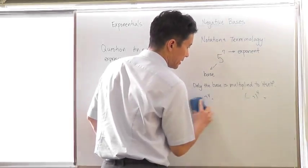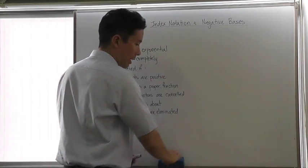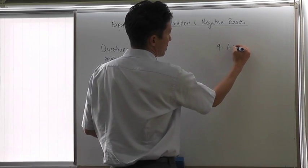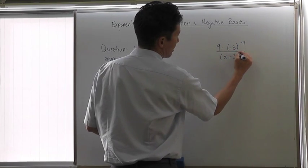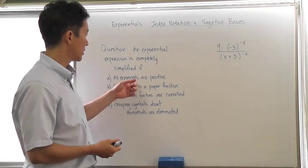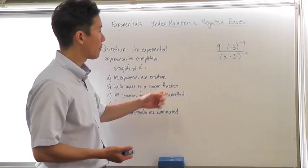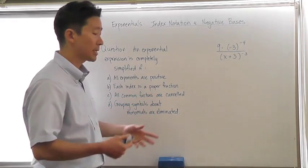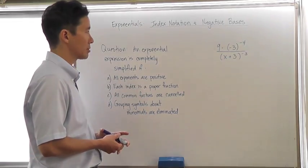Let's take a look at one simple example and check whether something is simplified or not. Let's say we have nine times negative three raised to the negative fourth power, all divided by x plus three raised to the negative third power. Looking at this, there are a couple of things: first, the exponents are not positive, so we need to change that. The index is a proper fraction — there are no fractional exponents, so we're fine there. All common factors are not necessarily cancelled because of this expression. And the grouping symbols above the monomials are not yet eliminated.